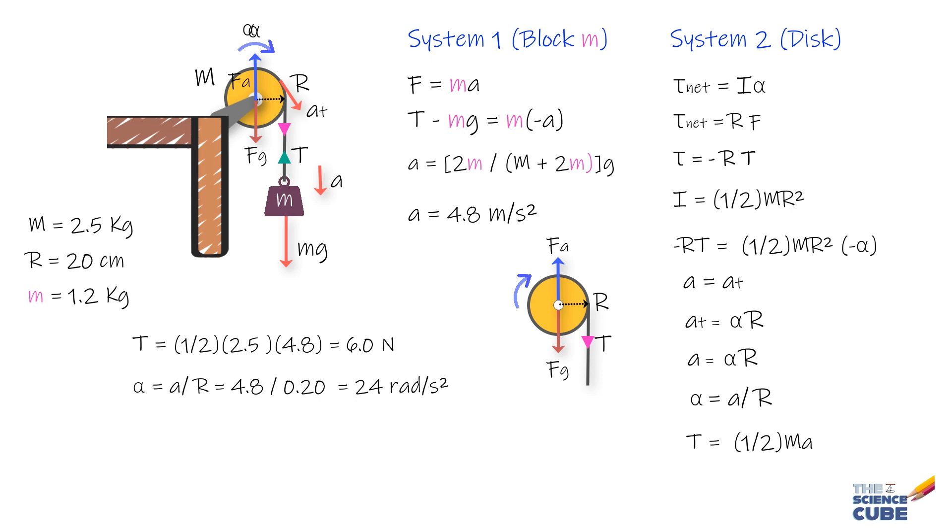if we consider this disc as massless, as we usually have been doing in most problems in the past, and put M equals 0, we get A equals G and T equals 0. And this is what we should expect, because then the block would just fall as a free body.